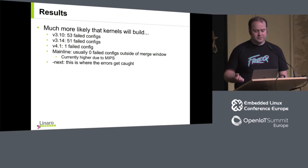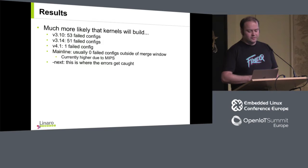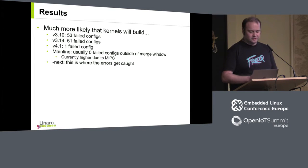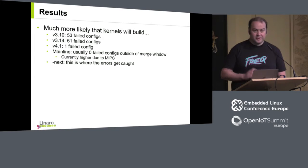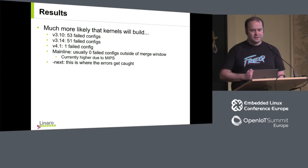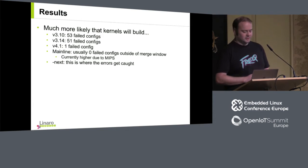It used to be quite common for many embedded targets to fail to build because people wouldn't be testing every single one all the time on mainline. But since we've got KernelCI and other build systems doing this, you can see the numbers here. For 3.10 there were 50-odd failed configs; by 4.1 there was only one configuration failing to build. Right now it's not quite so good, partly because we're in the merge window, and also because we just recently added MIPS and we're still sorting through some of the issues. It does take a little while for a new architecture to catch up.